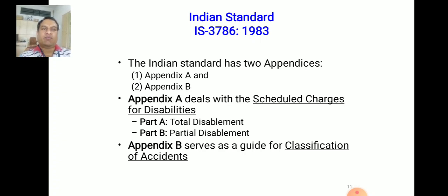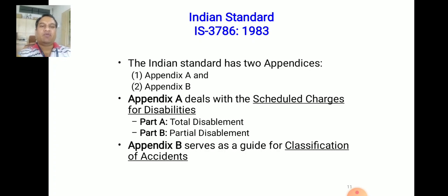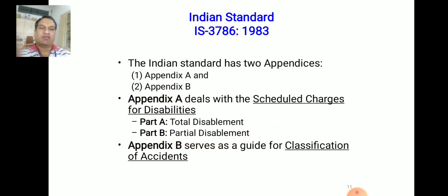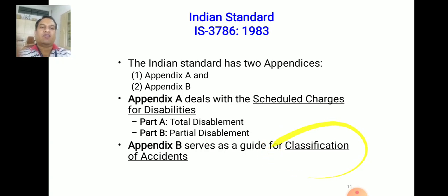The standard deals with definitions of terms, computation of FR, SR, IR, schedule charges for disabilities, classification of accidents, assessment of work injuries, and special cases. The Indian Standard has two appendices: Appendix A deals with schedule charges for disabilities — Part A being Total Disablement and Part B being Partial Disablement — and Appendix B serves as a guide for classification of accidents.